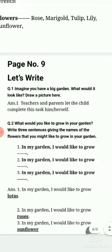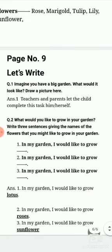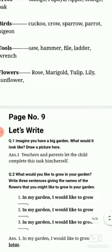Page number 9, let's write. Imagine you have a big garden — you have to think about it and imagine how it would look. Draw a picture of your imagined garden. Then question number 2: what would you like to grow in your garden? Write three sentences giving the names of the flowers you might like to grow. For example: in my garden I would like to grow roses. In my garden I would like to grow sunflowers. You can write the name of any flower you wish.